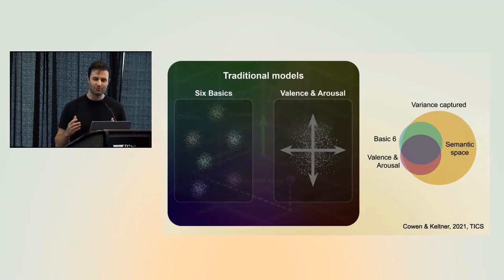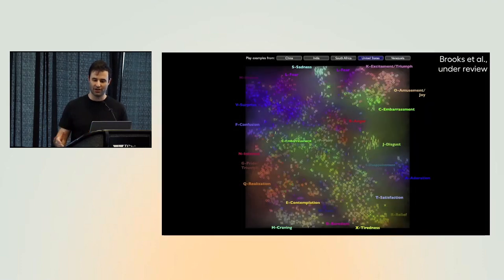And in fact, when you sort expressions into six categories or along two dimensions, that turns out to capture less than a third of the information that people reliably glean from facial expressions, vocal bursts, speech prosody, multimodal expressions, and so forth. And that means that affective computing methods that are based on those older taxonomies are really missing a big part of the picture.